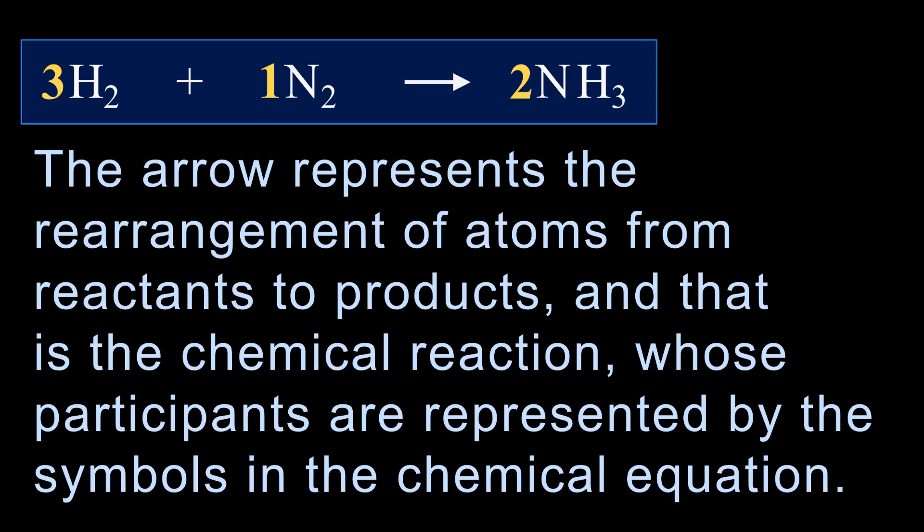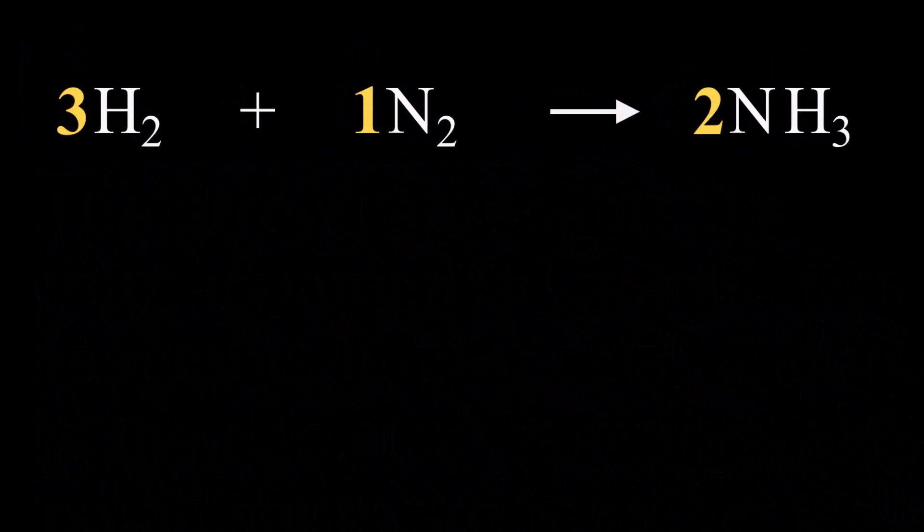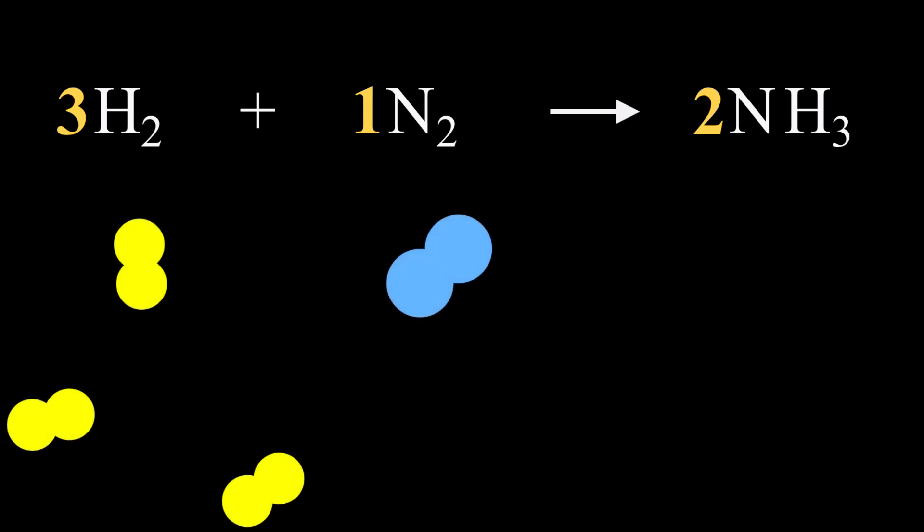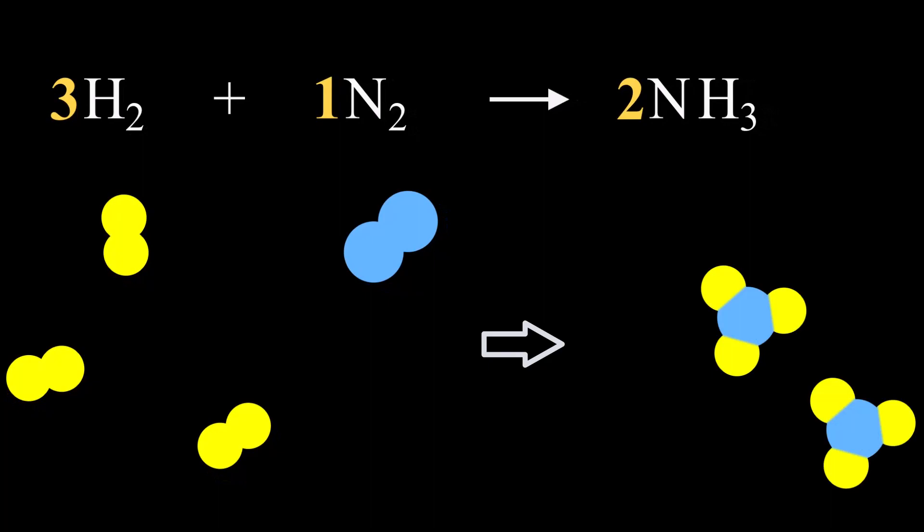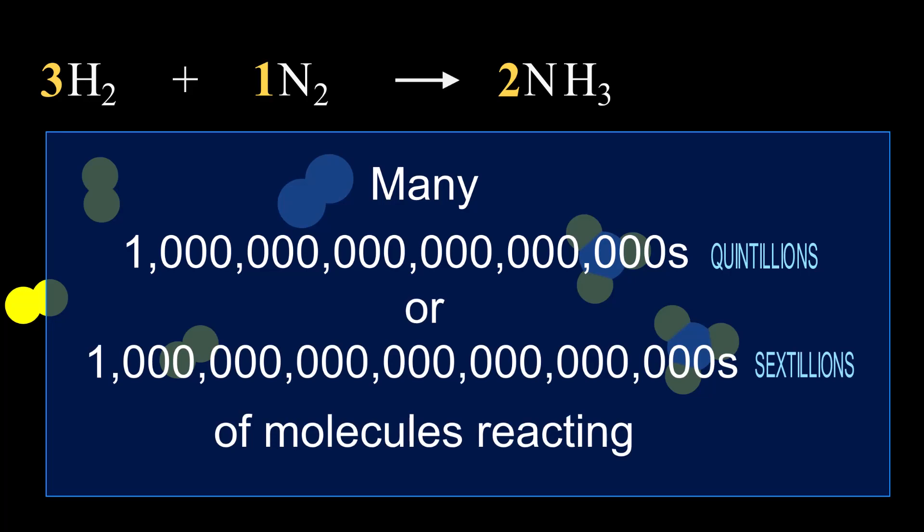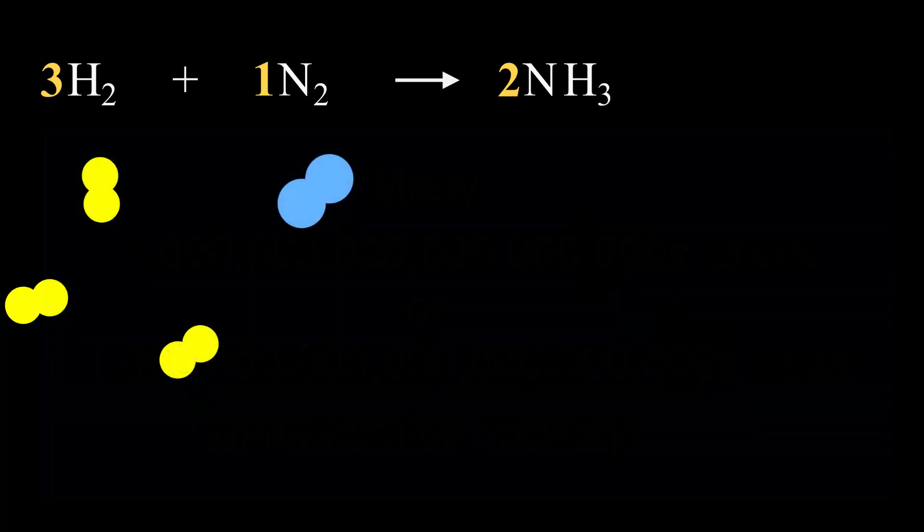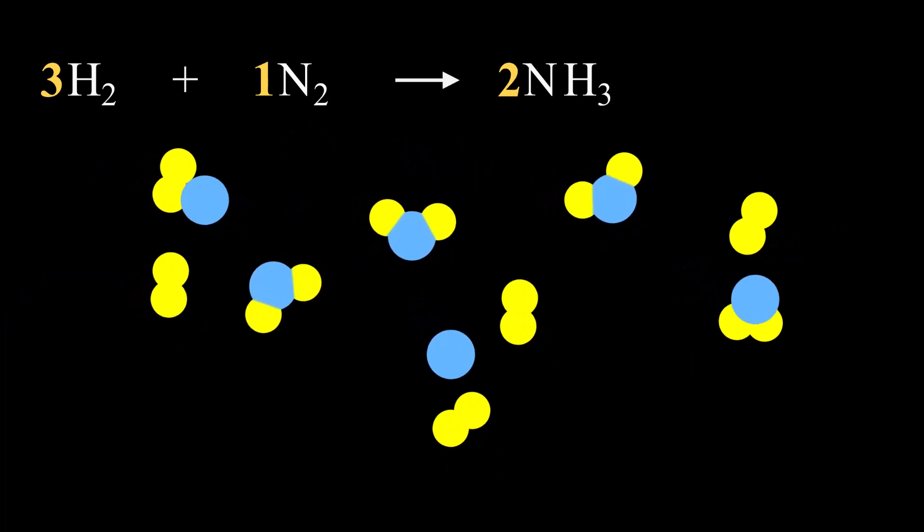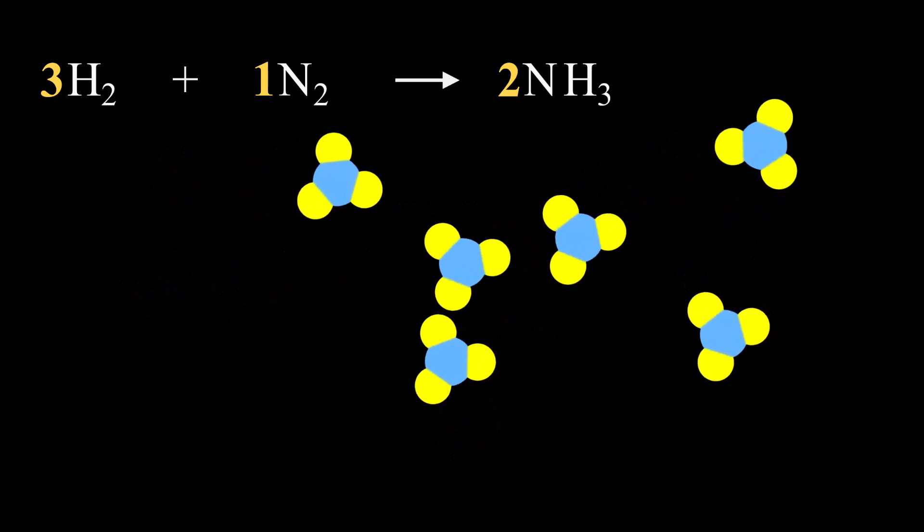We now need to do something very important. We need to adjust our understanding of the coefficients. The way the coefficients have been represented so far, it seems that they are telling us a specific number of substances. Three hydrogen molecules reacting with one nitrogen molecule, producing two ammonia molecules. However, this is a very short-sighted view, because in real life, any reaction you can see with your own eyes has many quintillions or sextillions of molecules reacting. That is not an exaggeration, and I hope it gives you an idea of how very, very tiny atoms and molecules are. So a more realistic view of the reaction would be something like this, where many, many molecules are colliding and rearranging, and the few molecules I've added represents the sextillions of molecules actually reacting.